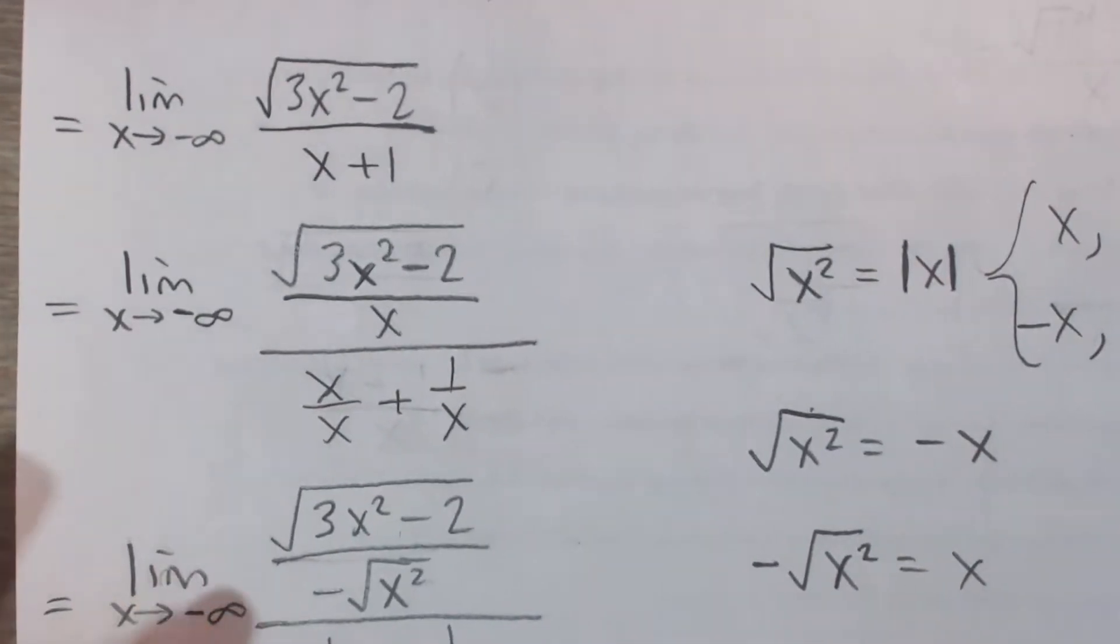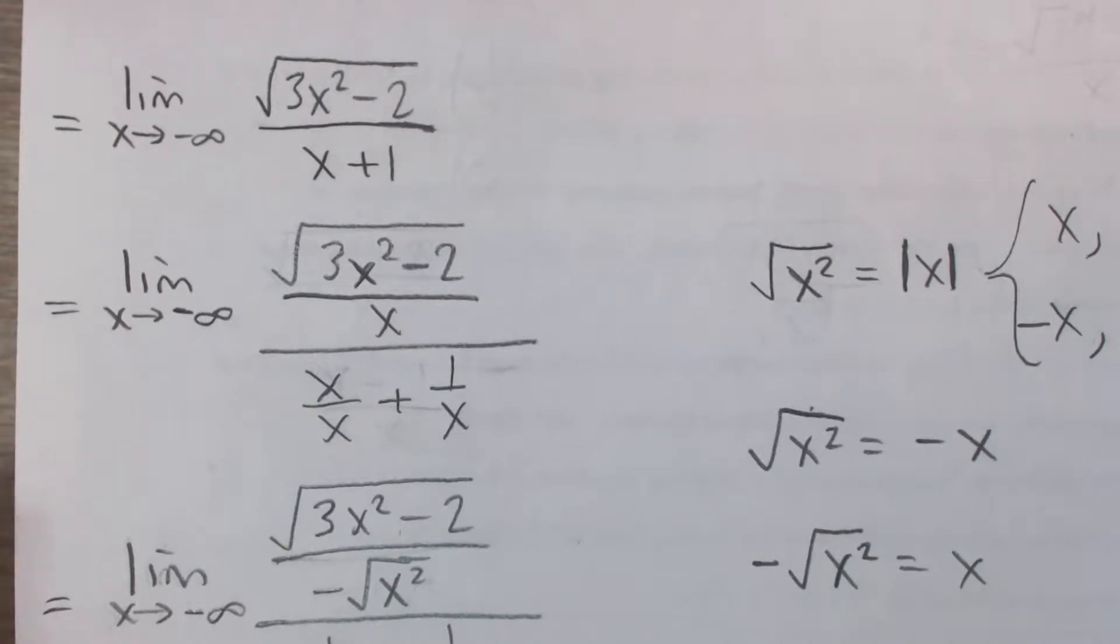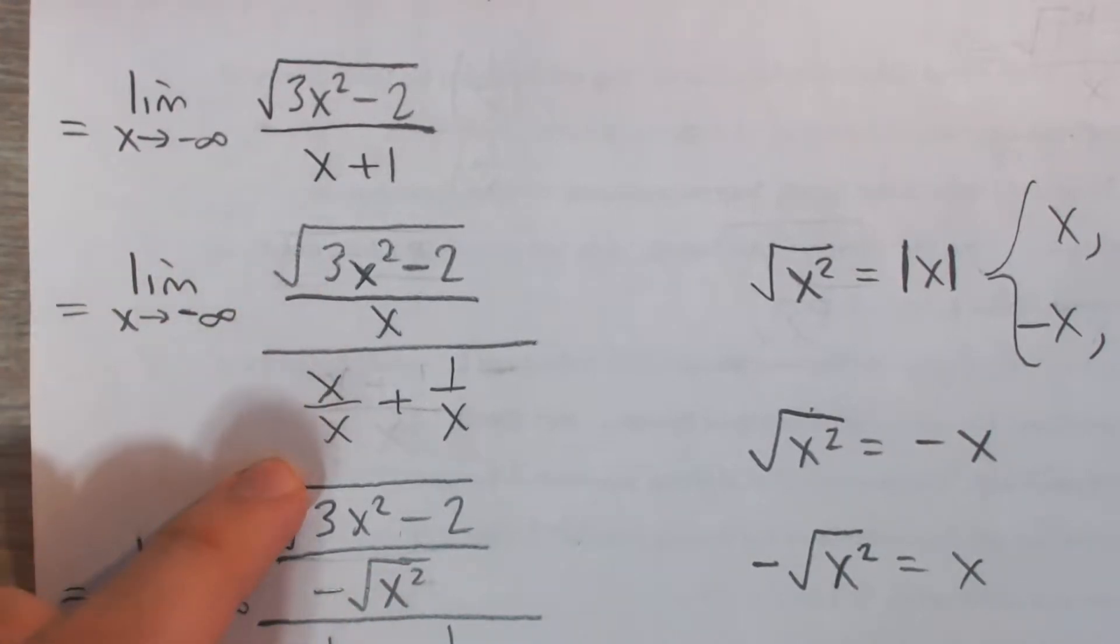So how do we go about this? Well, in general, a good trick for rational functions, limits of rational functions as they approach infinity, is to divide by the highest power in the denominator. In this case, it's just 1, right? We have x plus 1 in the denominator. So we're going to divide both numerator and denominator by x.